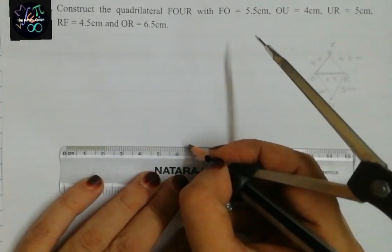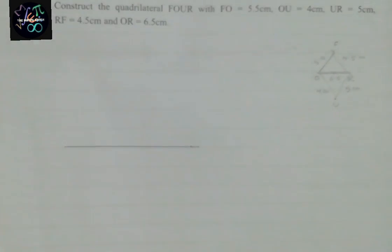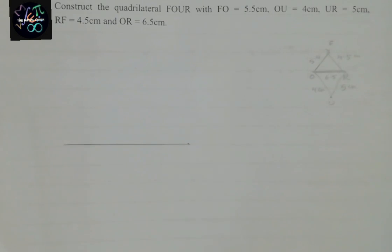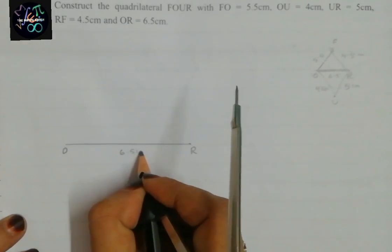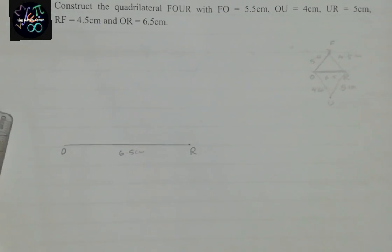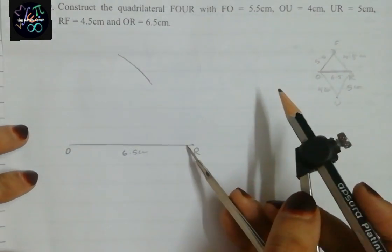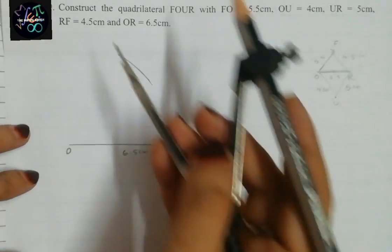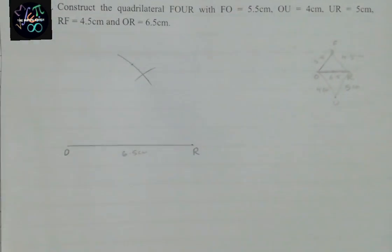We draw OR as exactly 6.5 centimeter. From O, FO is 5.5 cm — we measure exactly 5.5 on the scale, keep it on O and draw one arc. Then from R, RF is 4.5 cm — we take exactly 4.5 and cut an arc to find point F. Let us join these points.